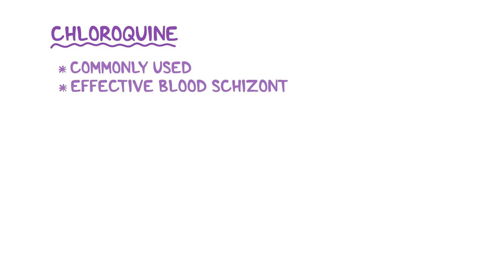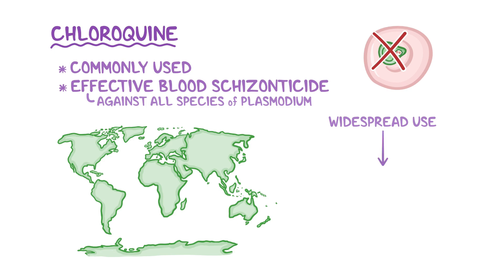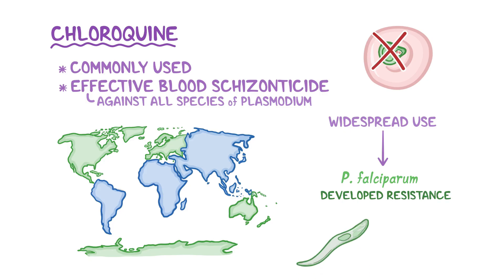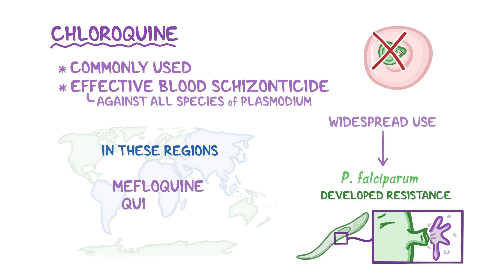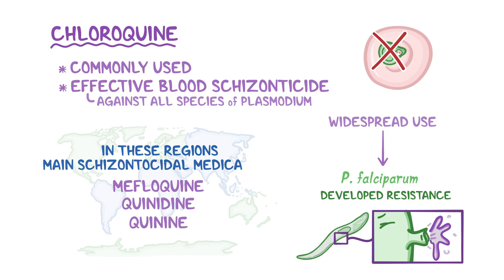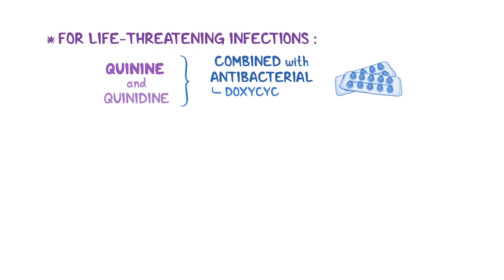Chloroquine is one of the most commonly used antimalarial medications, and it's an effective blood schizonticide, meaning it kills the plasmodium found in erythrocytes. It's effective against all species of plasmodium, but its widespread use has caused plasmodium falciparum in many parts of South America, Africa, and Asia to develop resistance via an efflux pump on their membrane that can remove this medication. In these regions, mefloquine, quinidine, and quinine can be used as the main schizonticidal medication. For life-threatening plasmodium infections, quinine and quinidine are often combined with an antibacterial like doxycycline and clindamycin.